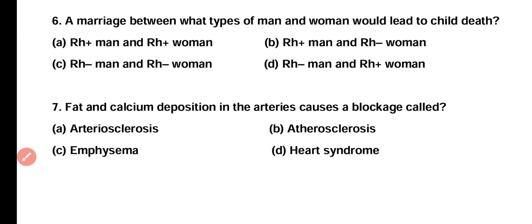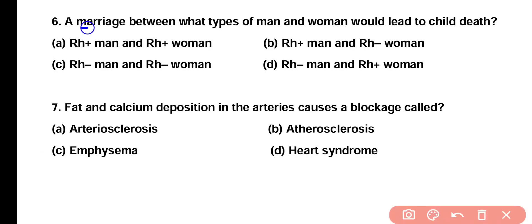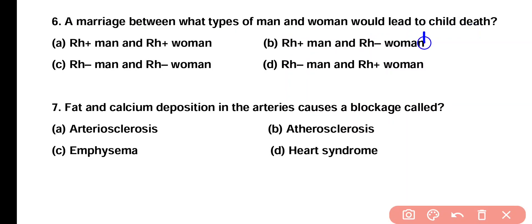Question number 6. A marriage between what type of man and woman would lead to child death? RH positive man and RH positive woman, RH positive man and RH negative woman, RH negative man and RH negative woman, or RH negative man and RH positive woman? Correct answer is option B. If a marriage between RH positive man and RH negative woman, the child death will be due to erythroblastosis fetalis.